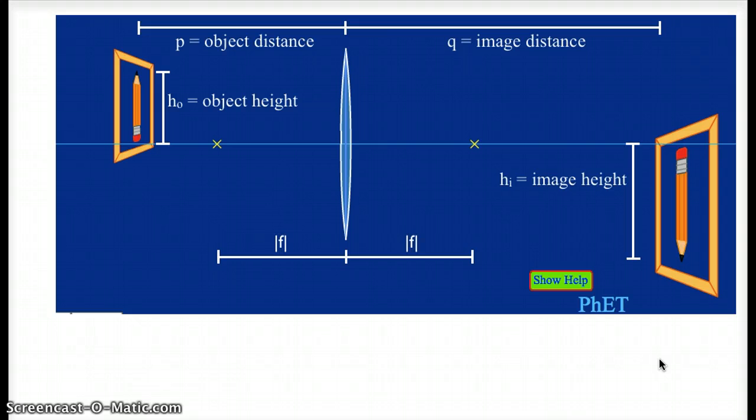And so it's helpful to have some equations. So before I write down any equations, I want to label everything in this diagram. So the two yellow x's, those are our focal points. They are a distance away from the center of the lens equal to the absolute value of the focal length for that lens.